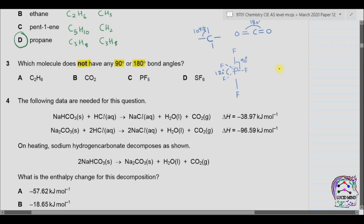Part D is SF6. In SF6, four fluorine atoms are in the same plane, and the bond angle is 90 degrees. The fluorine atoms above and below the plane also have a bond angle of 90 degrees. So the answer to this question is A — ethane, which has a tetrahedral bond angle of 109.5 degrees.